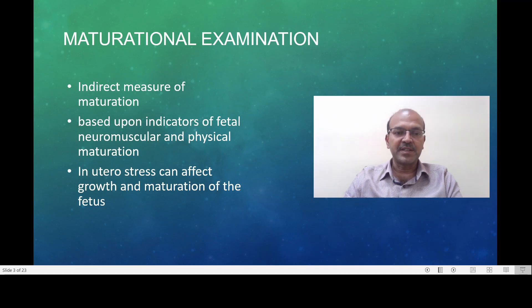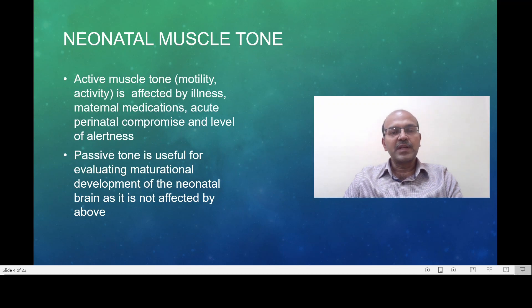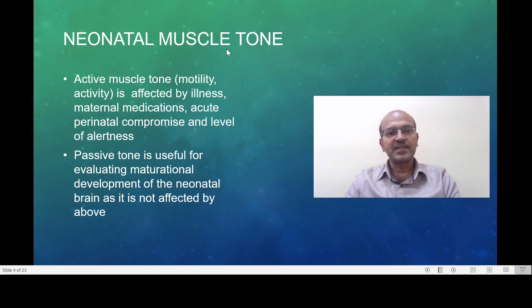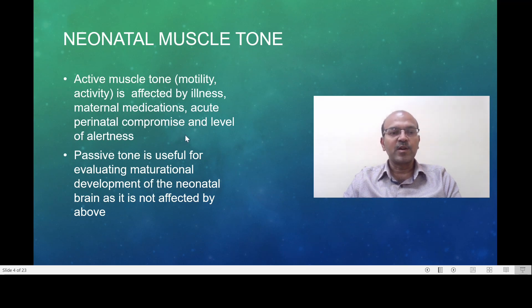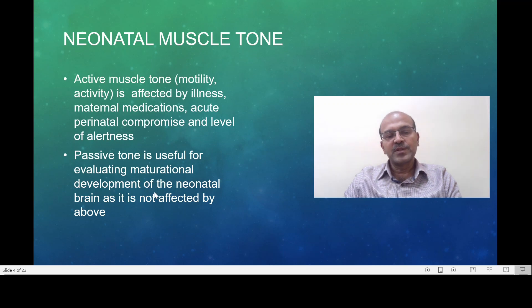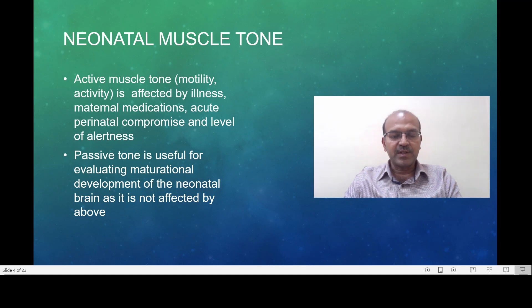We can see this in the lung and neurological system in gestational diabetic mothers. The parameters assessed in the neuromuscular part include neonatal muscle tone, which can be active or passive. Active tone is affected by illness, maternal medications, acute perinatal compromise, and level of alertness, so we don't rely on it. Passive tone is useful for evaluating maturation development as it is not affected by these conditions.